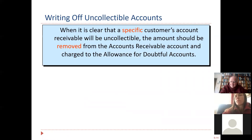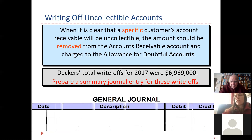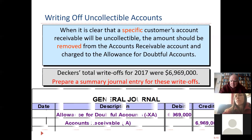Now, what happens when we know who the bad partner is? What happens when we actually know who's not going to pay us? When it becomes clear that a specific account receivable will be uncollectible, the amount should be taken out of AR and charged to the allowance account. That contra asset account is going to be debited, and the credit will always be accounts receivable.